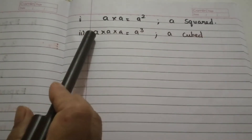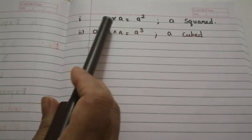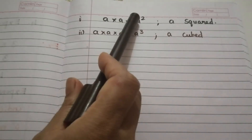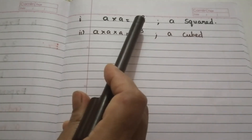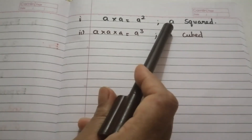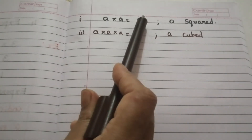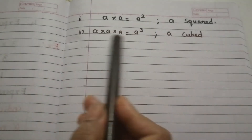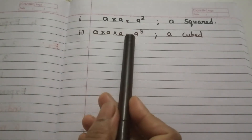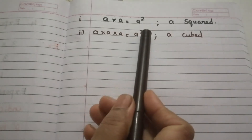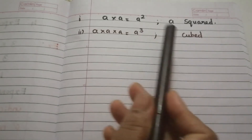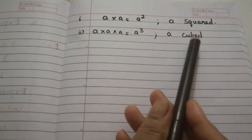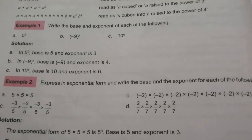Looking at these examples: a into a equals a power 2, which we read as 'a square.' Likewise, a into a into a equals a power 3, which is read as 'a cubed.'